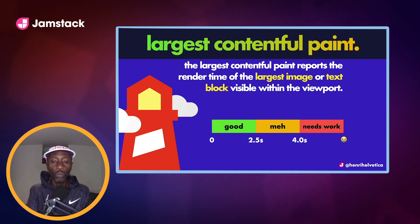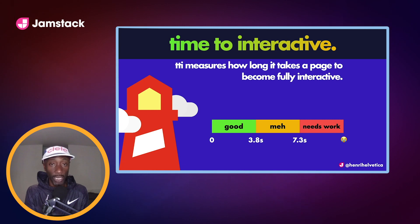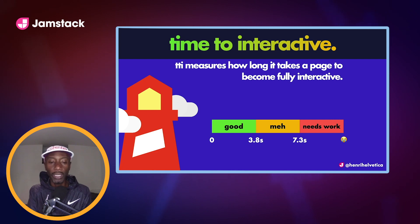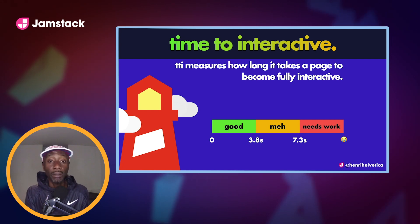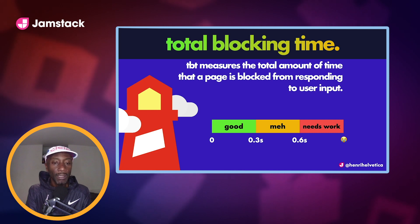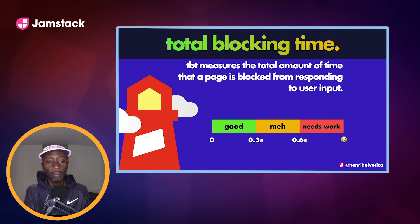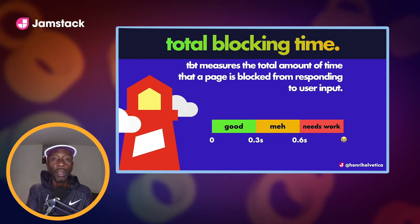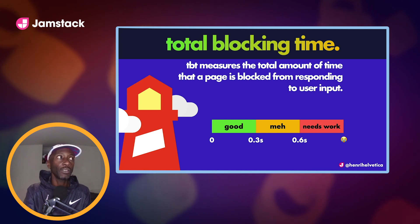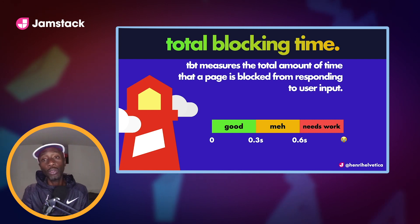Largest Contentful Paint (LCP) reports the render time of the largest image or text block visible within the viewport — you'll see this is very important a little later. Next up, Time to Interactive (TTI) measures how long it takes a page to become fully interactive. You can see the associated timing thresholds to keep in mind.